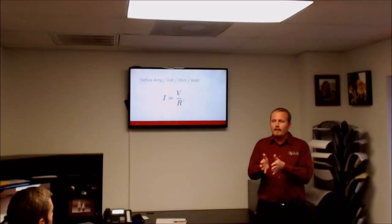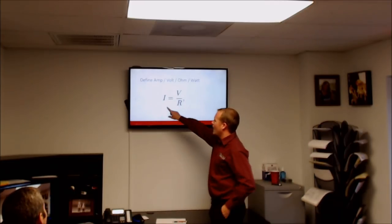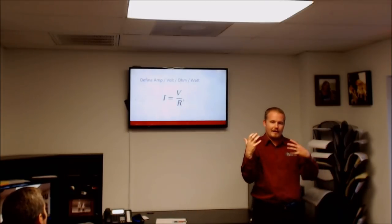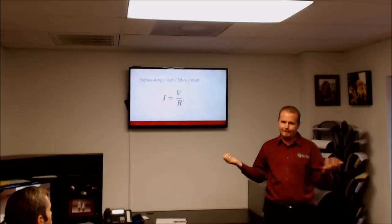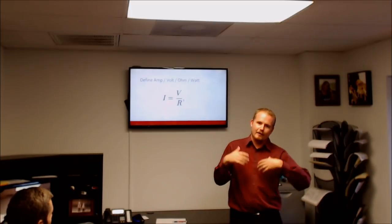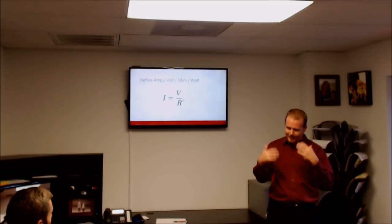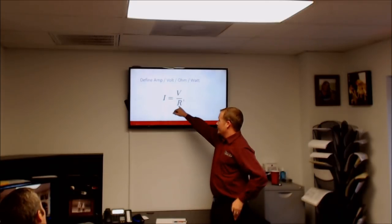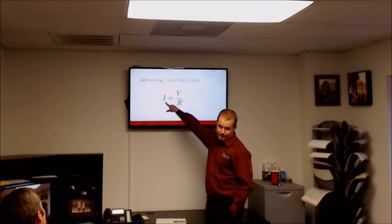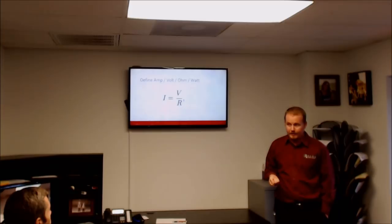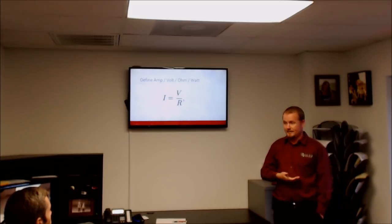When talking about Ohm's Law: I is amperage, V is voltage, R is resistance. Amperage equals voltage divided by resistance. They have a correlating effect — you can work that algebraically and solve for any one if you have the other two. The thing to understand is that the greater the resistance you have, the less amperage you have. In any circuit, if you apply more resistance, you're going to have less draw — fewer electrons moving through the circuit.